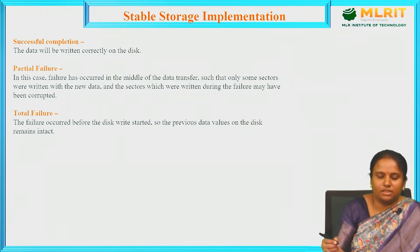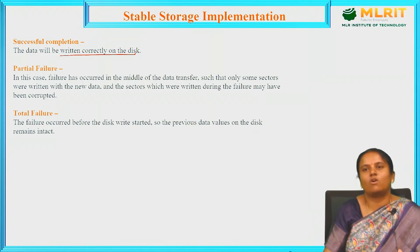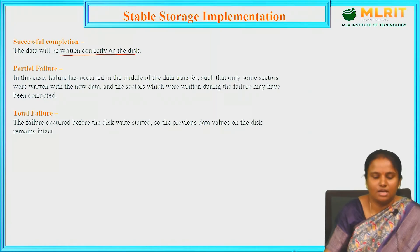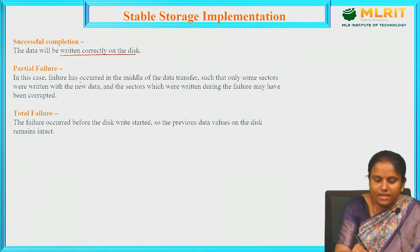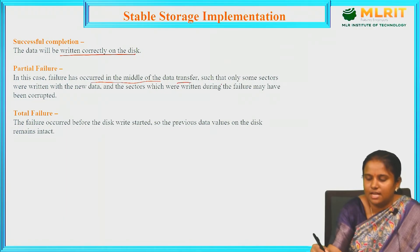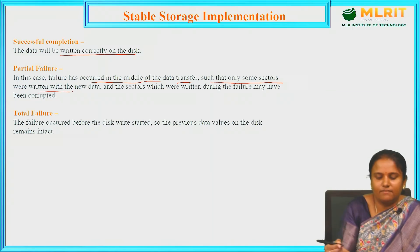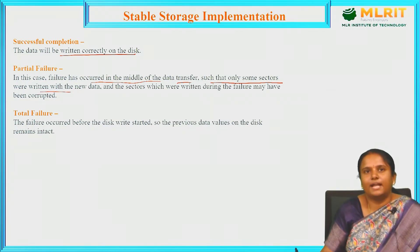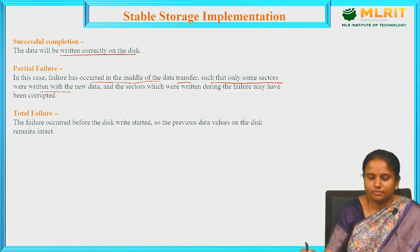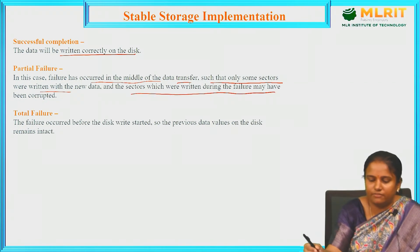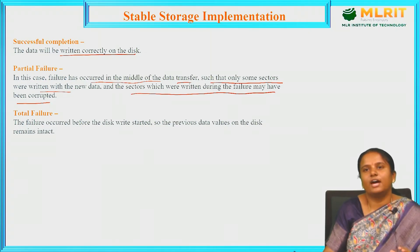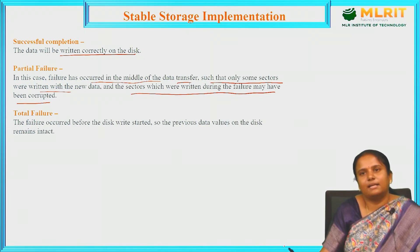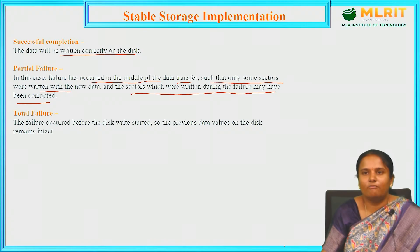What is successful completion? The data will be written correctly on the disk — whatever you are writing will be correctly stored on the disk and it will be safe. What is partial failure? In this case, failure has occurred in the middle of the data transfer such that only some sectors were written with the new data. Whenever writing some data, at the middle of the data transfer, some sectors may have new data and sectors written during failure may be corrupted — that is a partial failure.